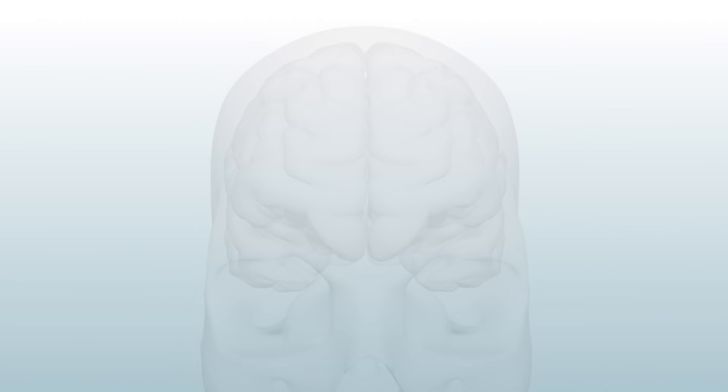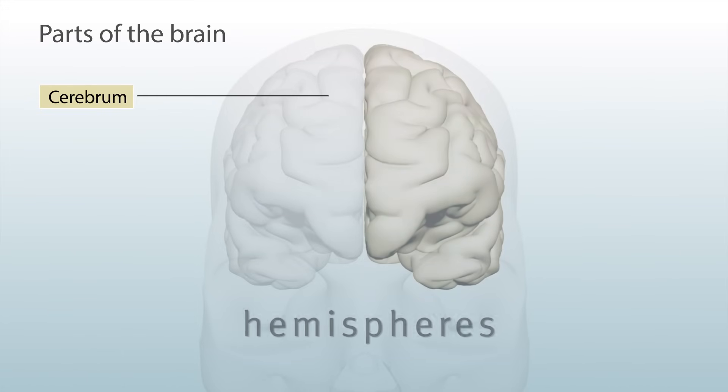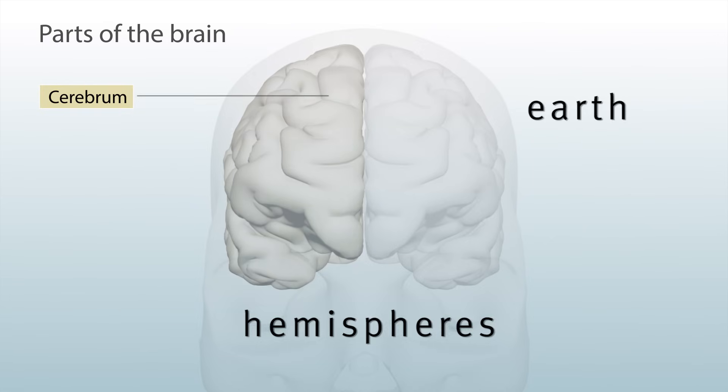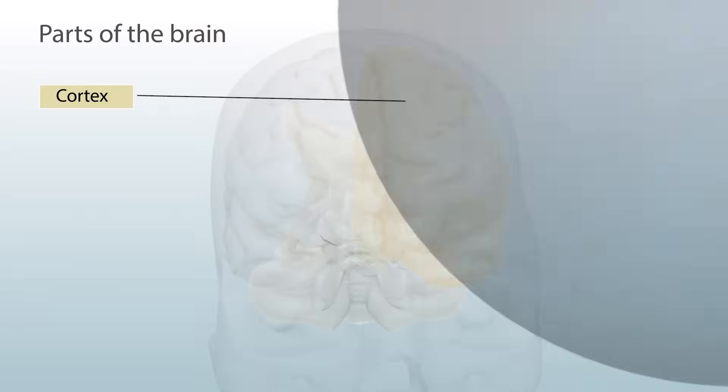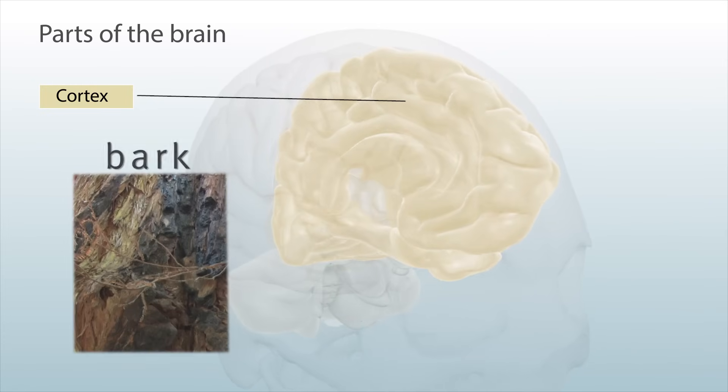The largest part is the cerebrum, which is divided into two sides called hemispheres, just like the Earth. The outer layer is known as the cortex, which is Latin for bark.